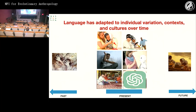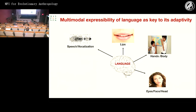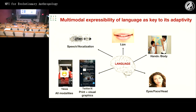I would like to claim that the multimodal expressibility of language is key to its adaptivity. We can express language with speech, but we also constantly see other people's lip movements, use our hands and body, our eyes, facial expressions, and head movements that have relevant linguistic features. And when technology allows, we combine text with visual emojis, pictures, and even videos as on TikTok. We like to use all modalities whenever language and technology allow.